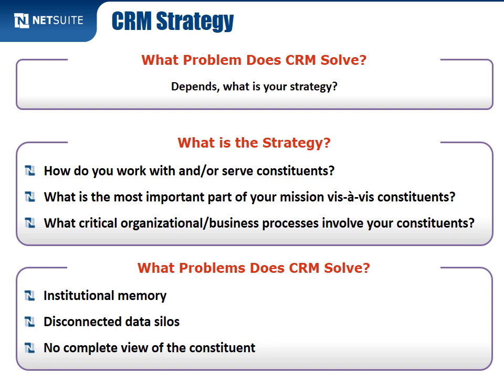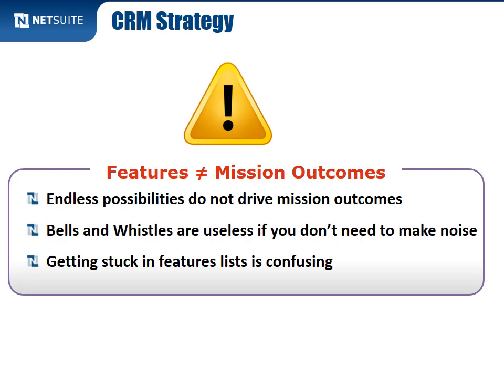CRM generally provides that institutional memory piece, starts to solve disconnected data silos, and creates a complete view of the constituent. But one thing that can get you in trouble quickly is starting to hear all the cool things CRM can do — there are endless possibilities. Figure out your strategy first, then figure out which features are relevant to that strategy, and completely ignore all the other features that aren't relevant. The space is so big and confusing you need something to organize yourself. We're going to talk about four CRM strategies.